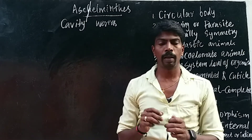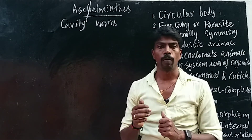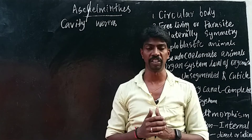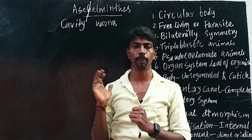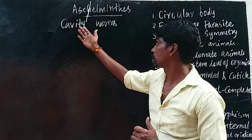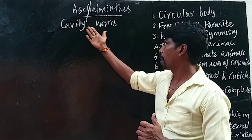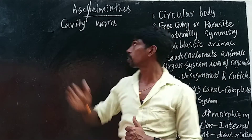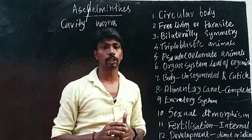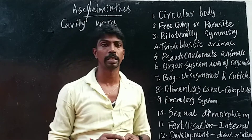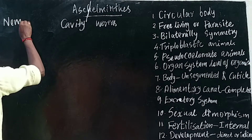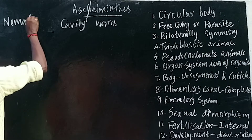The Phylum Aschelminthes animals have a body cavity. The animals in this phylum are known as cavity-formed animals, otherwise known as Aschelminthes. This phylum was previously known as Nematoda.